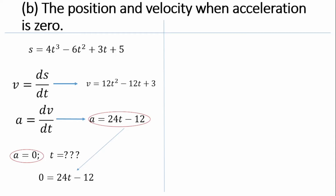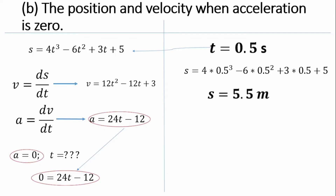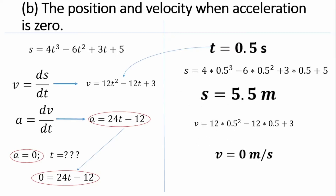Setting the acceleration equation equal to zero: 24t − 12 = 0, solving gives t = 0.5 seconds. Substituting t = 0.5 into the position equation gives x = 5.5 meters. Substituting t = 0.5 into the velocity equation gives v = 0 meters per second. So when acceleration is zero, the velocity is also zero.